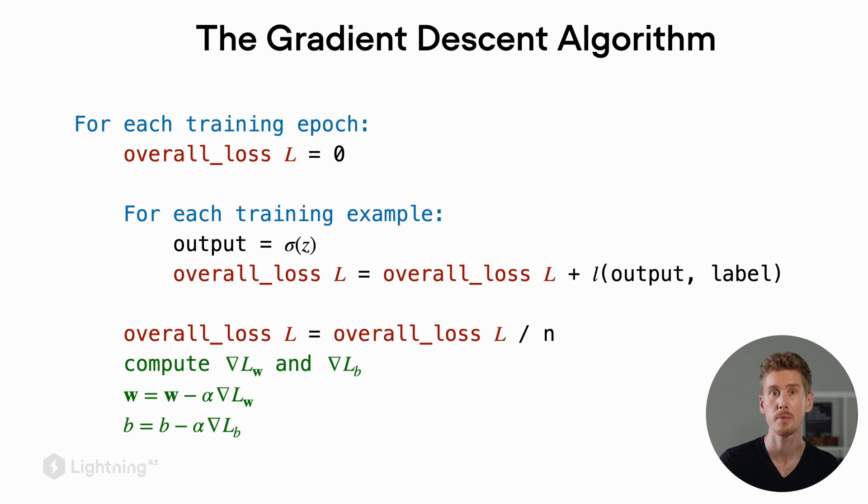And how we do this is by multiplying the gradient with alpha, where alpha is the so-called learning rate. It's essentially just a small value that scales the loss so that our updates are not too large, because large updates might disturb the training.